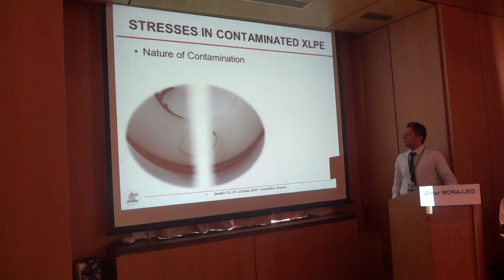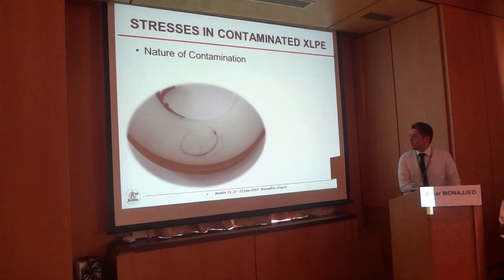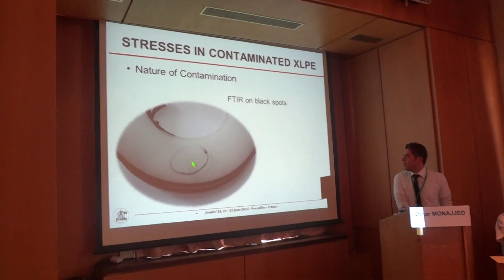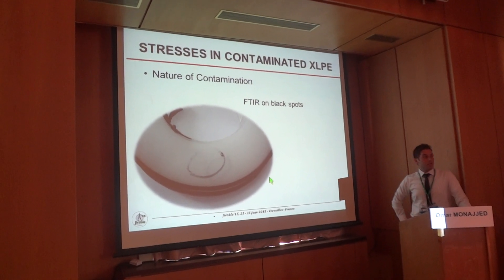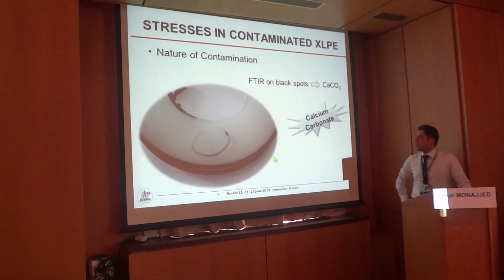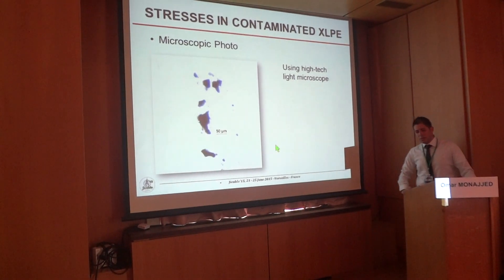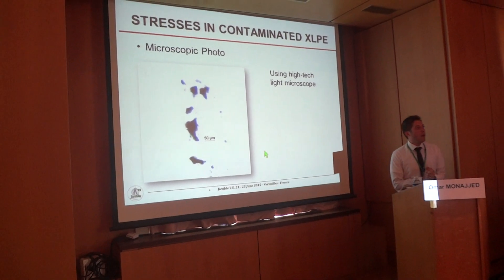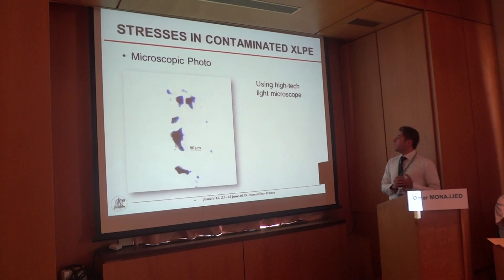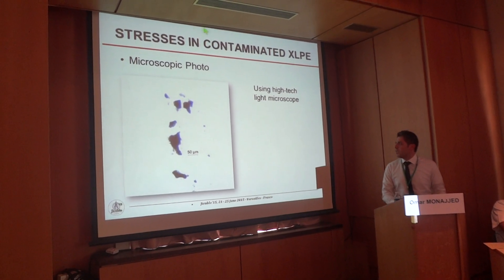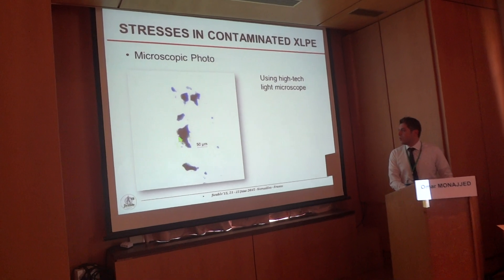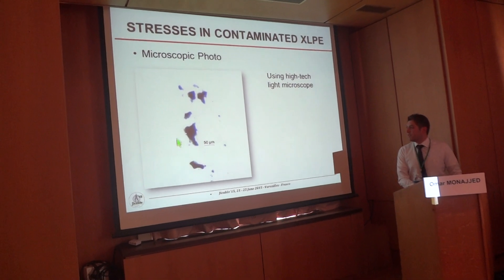First, the nature of contamination. This black spot here is the contamination — it is very small. By applying FTIR on this black spot, we get calcium carbonate. After that, we take a microscopic photo of the contamination using a high-tech light microscope. This figure here shows the different components of the impurity with a scale of 50 micrometers.